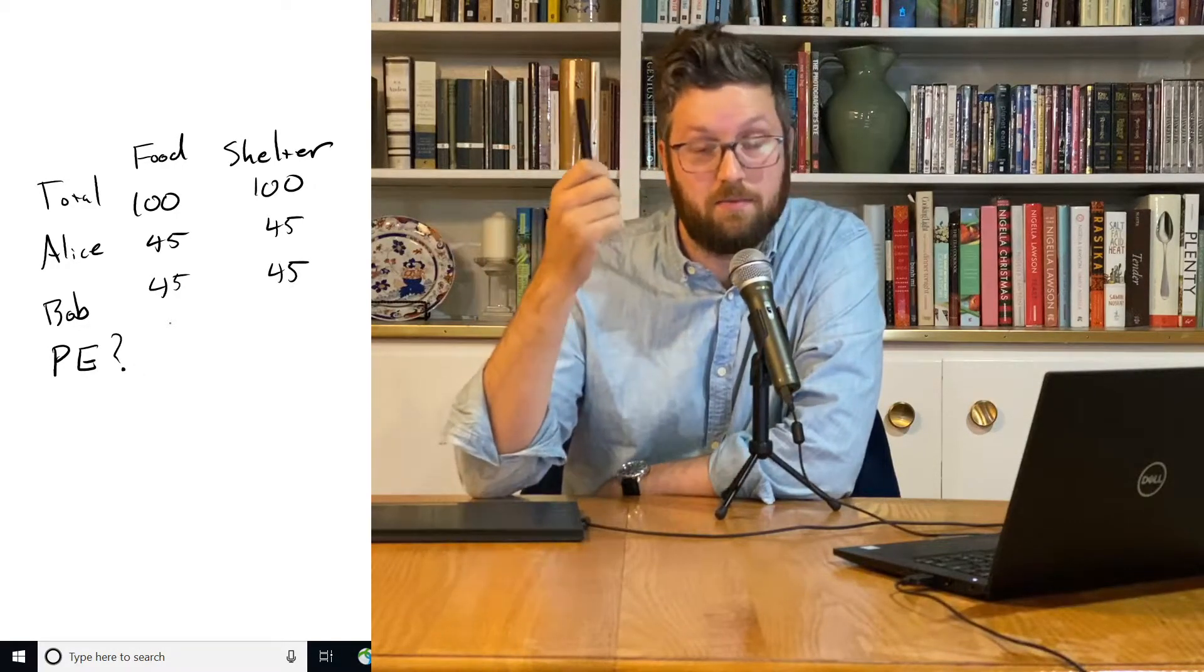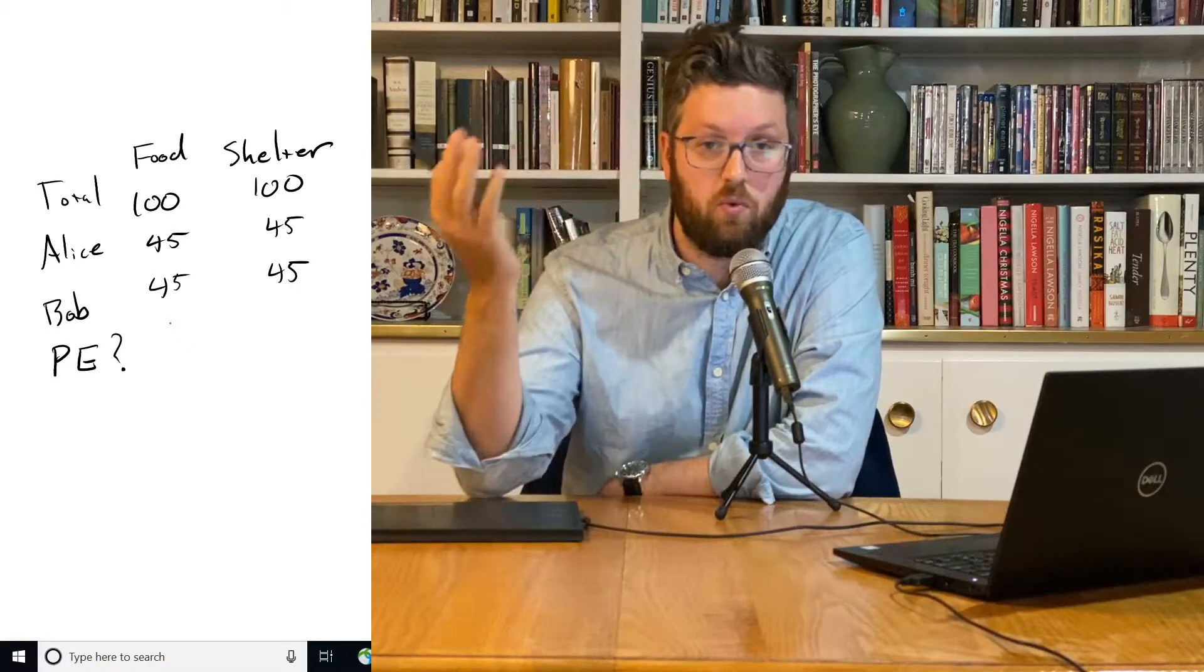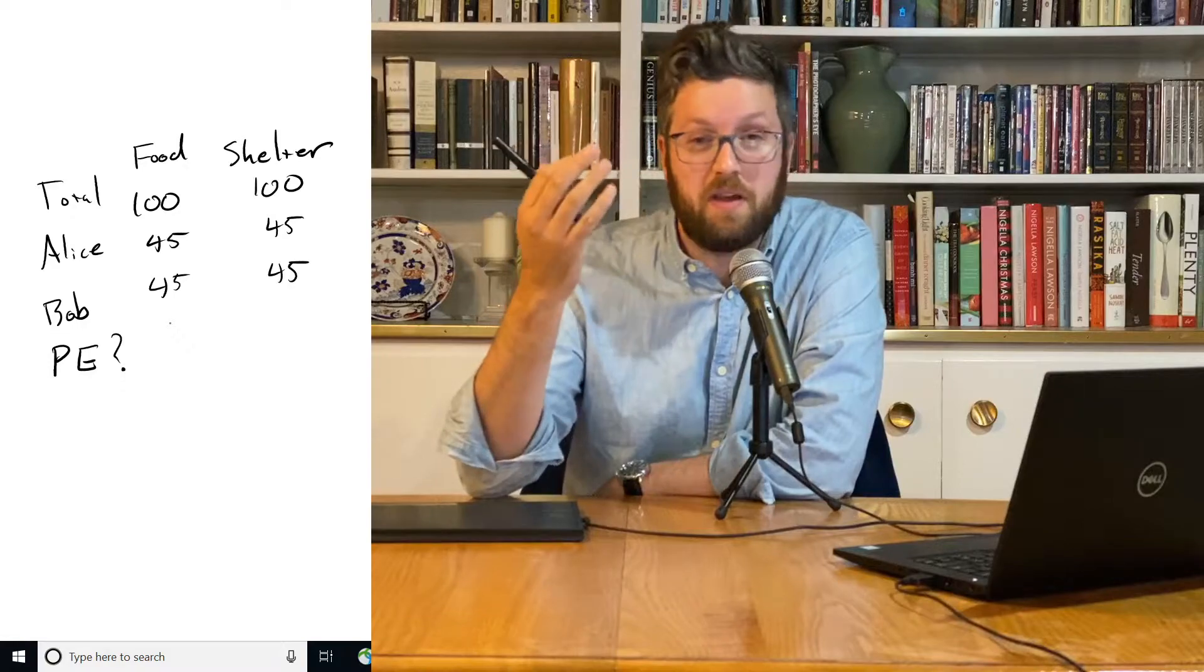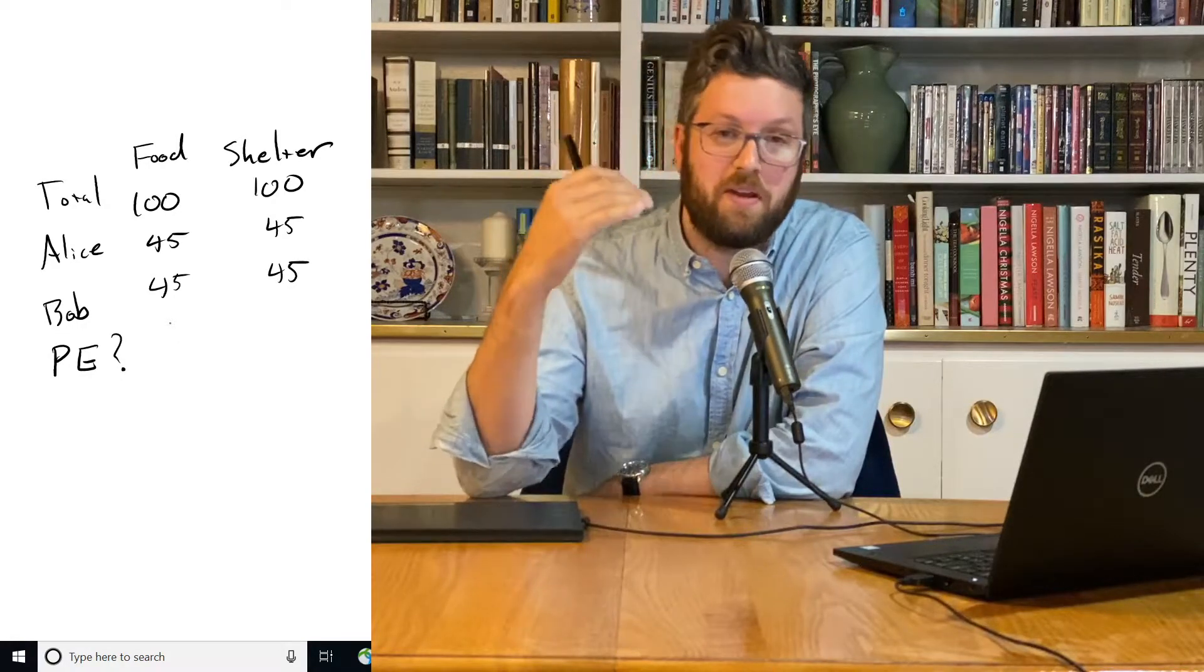We could give all 10 to Alice. Bob would still have 45, so he's no worse off. Alice now has 55, so she's better off. And so we would be able to improve her situation without making Bob worse off.